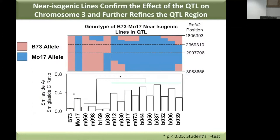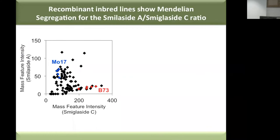Since these two compounds differ only by one acetyl group, we expected to find an acetyltransferase in our QTL interval. But there was no acetyltransferase there. At that point the project looked dead in the water — we had a small genetic area but really didn't know which gene to look at. There were probably a dozen genes in there and no clear candidate.